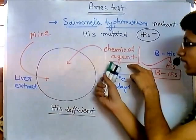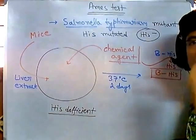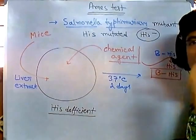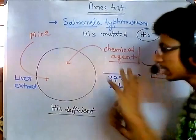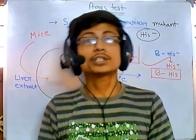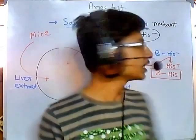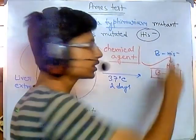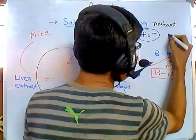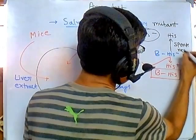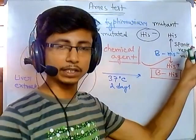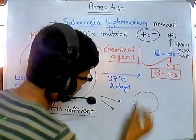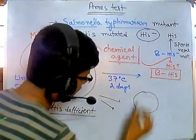We put the liver extract into the media along with the histidine-minus strain, then add the test chemical agent. If the chemical agent is mutagenic, it will turn histidine-minus to histidine-plus and we will see bacterial growth. If it is non-mutagenic, we won't see bacterial growth. However, there is one flaw: spontaneous mutations can occur in the histidine-negative strain, potentially turning histidine-minus to histidine-plus on their own.